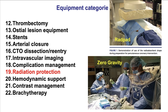Number 19 is equipment for radiation protection. There are disposable pads such as the RadPad that can minimize scatter radiation to the operator, or systems like the Zero Gravity that protects the operator by taking the weight of the lead off the operator's back.